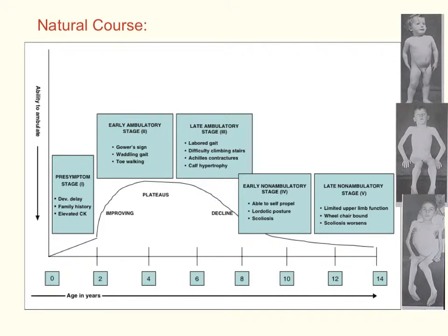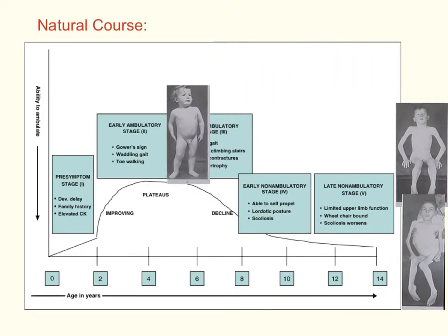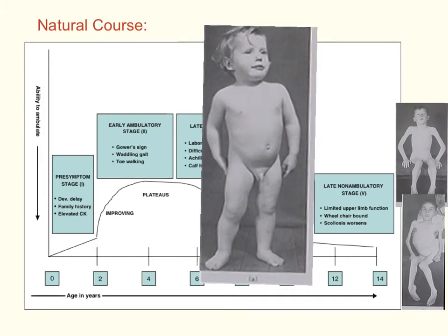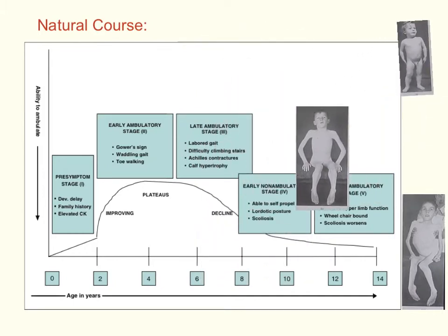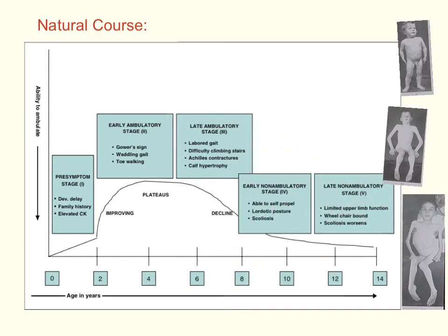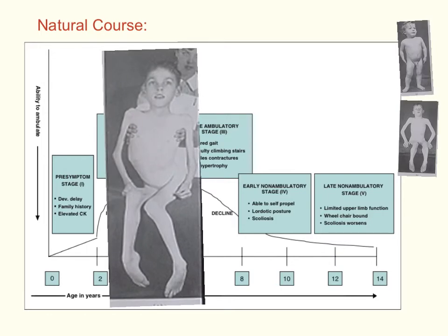Now that Patient X has a confirmed diagnosis of Duchenne's muscular dystrophy, it is important to discuss with him and his family the natural course of the disease. There are five stages to the disease, ranging from the pre-symptom stage in which patients show few signs, to the late non-ambulatory stage in which patients are wheelchair-bound. Between the ages of 2 and 12, the patient will typically see an improving phase, a plateauing phase, and a declining phase. During the improving phase, patients typically learn to walk and perform other motor functions. In the plateauing phase, gait starts to become labored and patients may start to develop physical difficulties. In the declining phase, patients lose ambulation and develop scoliosis.